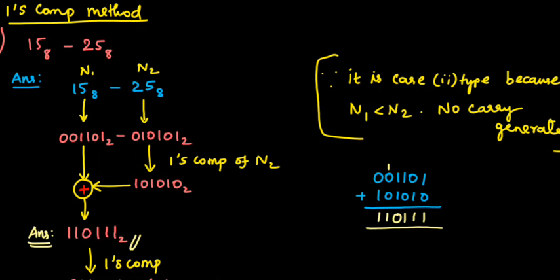To represent the answer in negative form, calculate the one's complement of the final answer. The one's complement of the final answer gives 001000, which is nothing but minus 001000, which is minus 8.